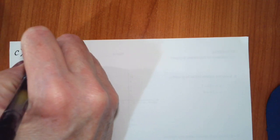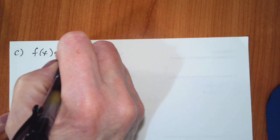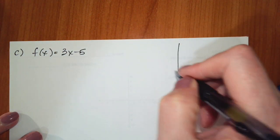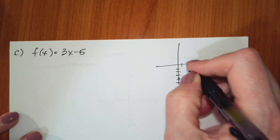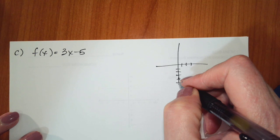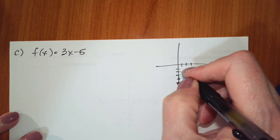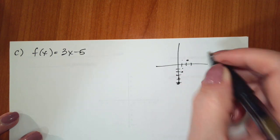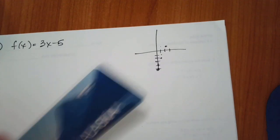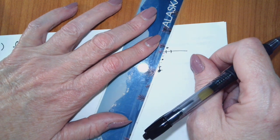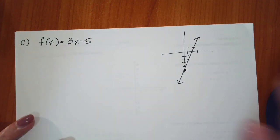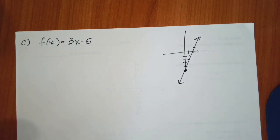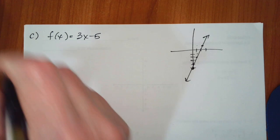For part c, f of x equals 3x minus 5. Graphically, this is a line with a y-intercept of negative 5 and a slope of 3. Since this is a polynomial of degree 1, the domain and range are unlimited. So the domain is everything, and the range is everything.